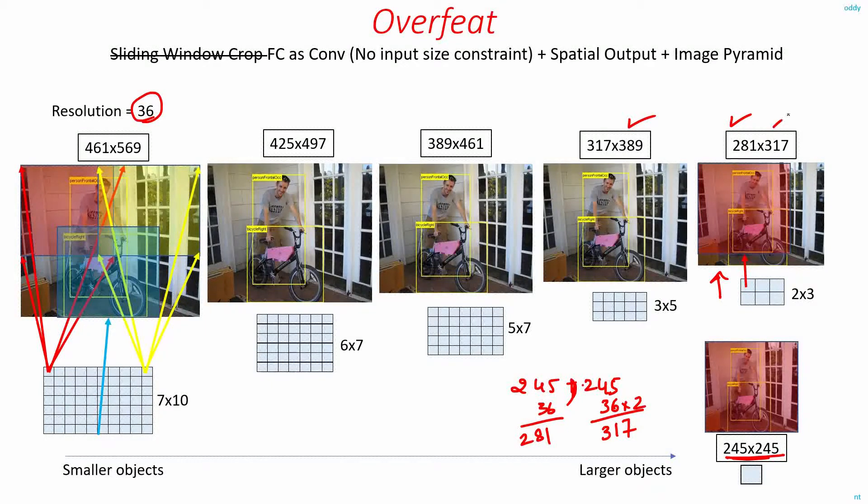To get this scale, they further add some multiples of 36. To this they add 36 to get 317, and to 317 they add 72 to get 389. They do the same thing for different scales. That's how they get the image dimensions.